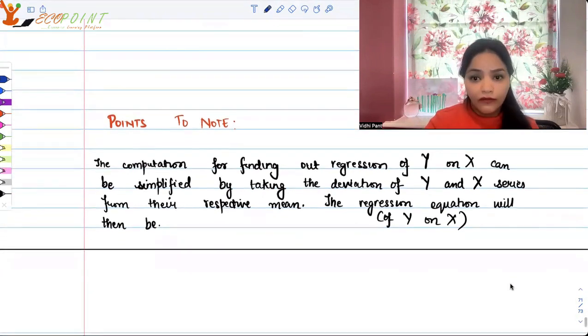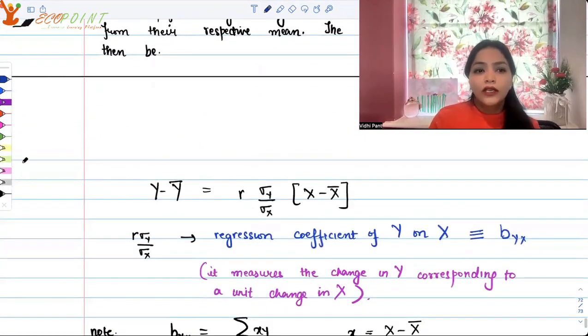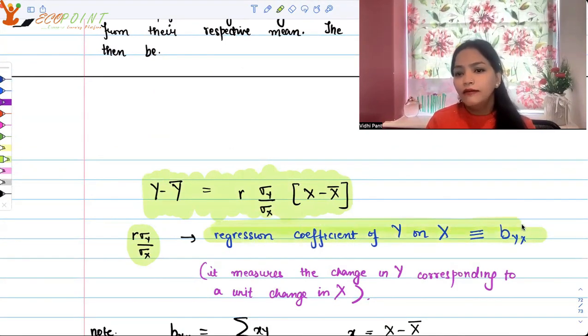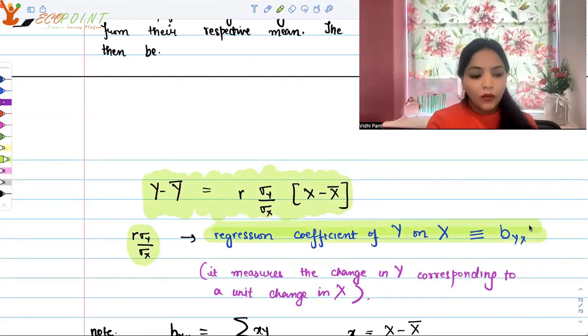from their respective means. That is, we can consider y minus y bar and x minus x bar to find out the regression of y on x. The regression equation of y on x, which I just wrote for you, is y minus y bar equals correlation coefficient r times sigma y upon sigma x into x minus x bar.